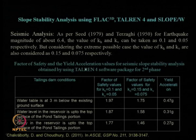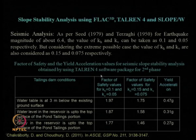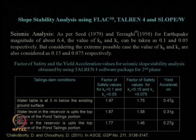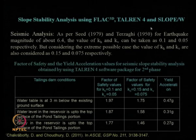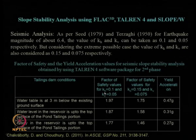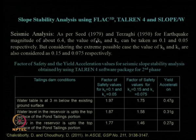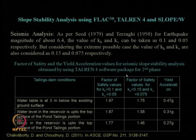Factor of safety and yield acceleration values for seismic slope stability analysis were obtained using Talren 4 software. FLAC 3D, Talren 4, and Slope W are common slope stability software that can be used. For seismic analysis in Talren and Slope W, k_h and k_v values must be provided to get the factor of safety, since these tools only support pseudo-static analysis — you cannot do complete dynamic analysis. In FLAC 3D, however, you can directly perform dynamic analysis by giving the acceleration time history without needing to specify seismic coefficients.